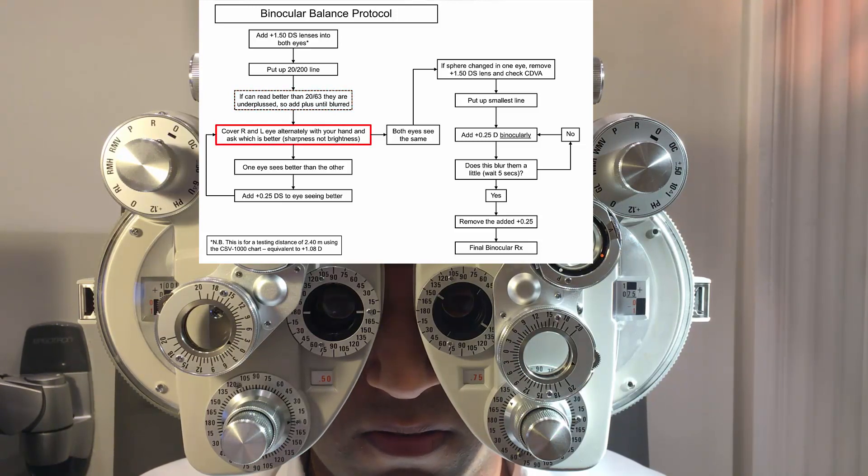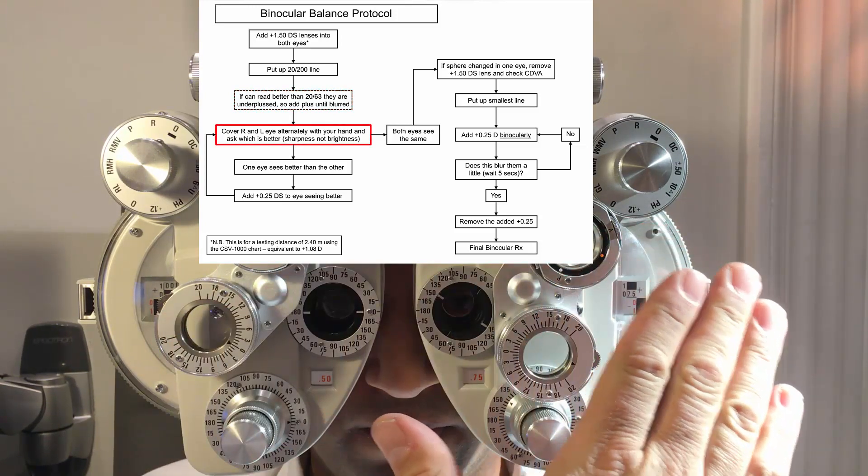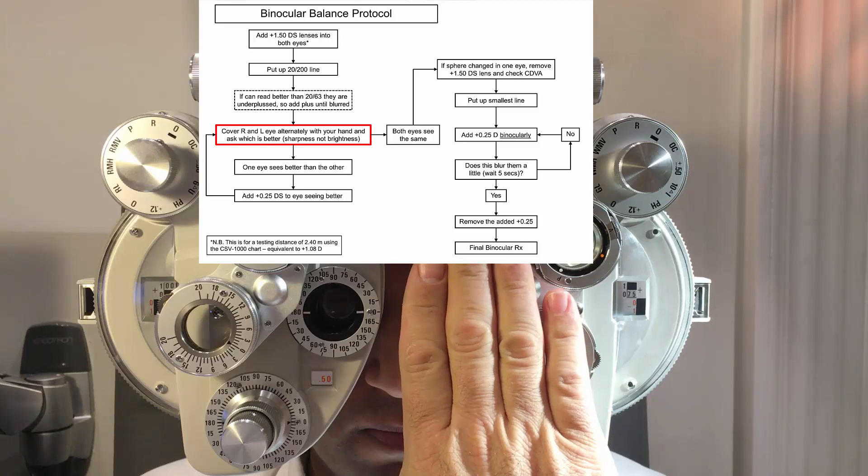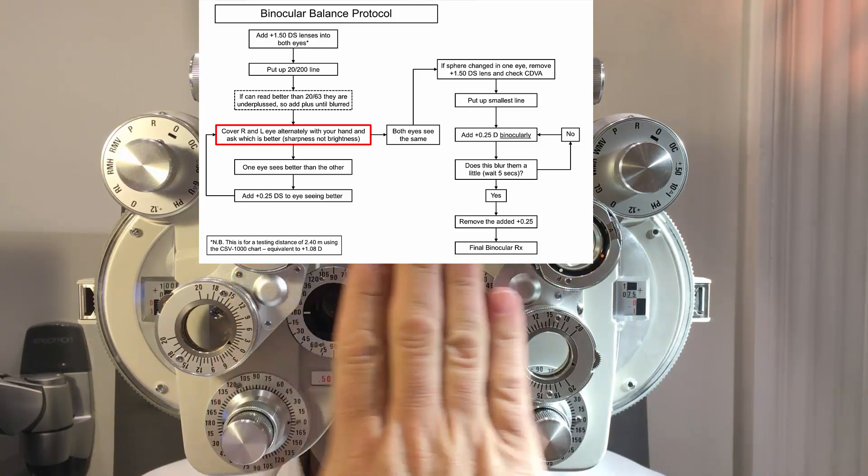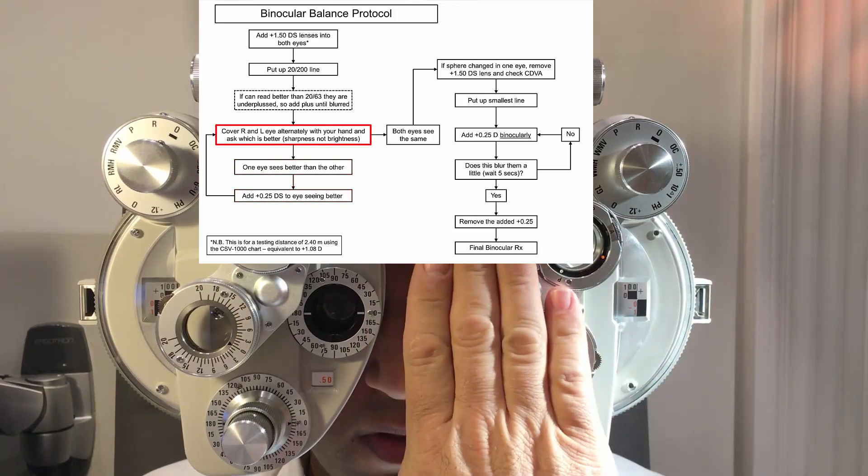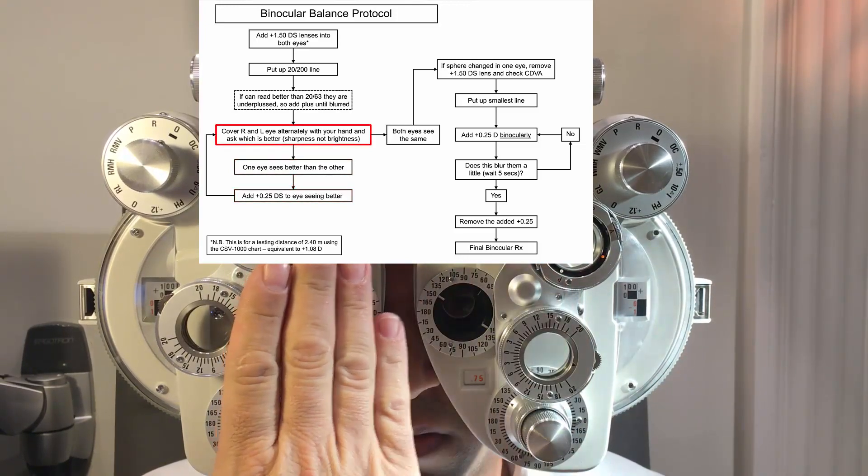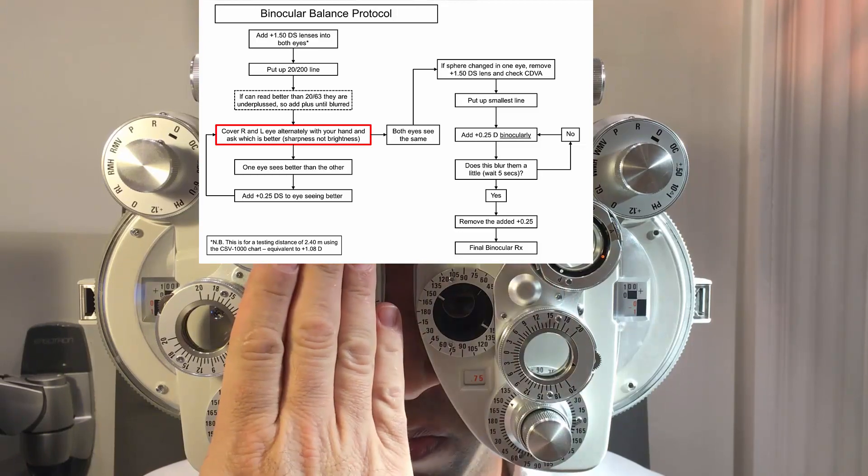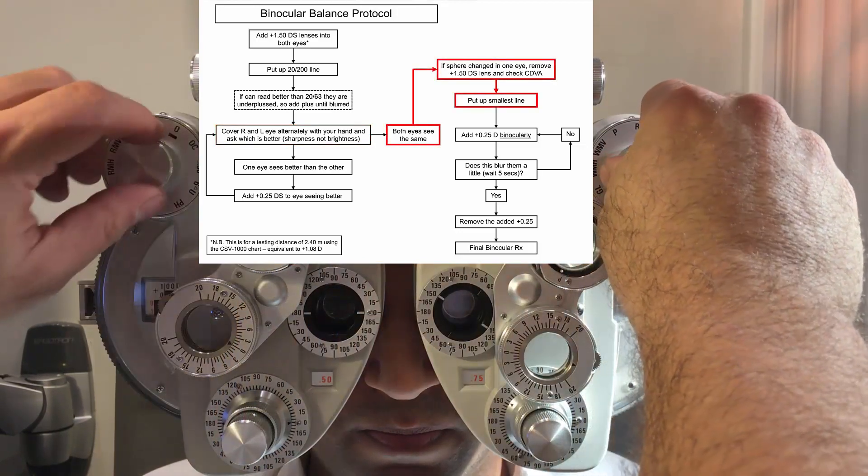Now look at the top line. Slightly different color, but the edges of the letters are sharper with the right eye or the left? Right. The left. Slightly better with the left? Yeah. And now with the right or left? Right, left. Similar. Pretty much the same. Very good. Excellent.